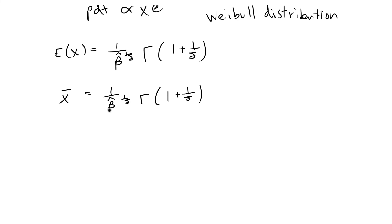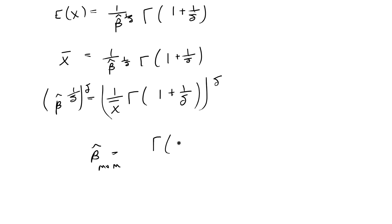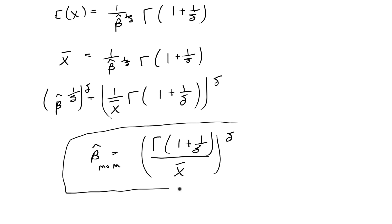I'm going to multiply both sides by beta hat to the 1 over delta and divide by the sample mean. That gives beta hat to the 1 over delta equals 1 over the sample mean times the gamma function of 1 plus 1 over delta. Then I raise both sides to the exponent delta, giving us our final solution: beta hat, the method of moments estimator for beta, equals the gamma function of 1 plus 1 over delta, over the sample mean, all raised to the delta. And we are done with this problem.